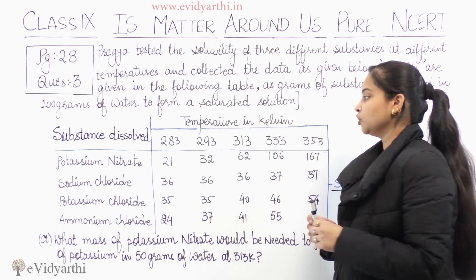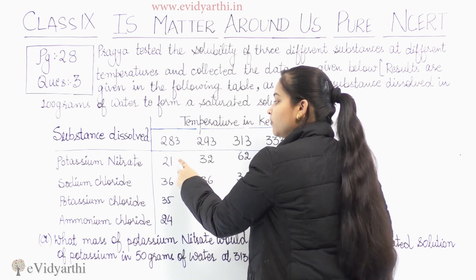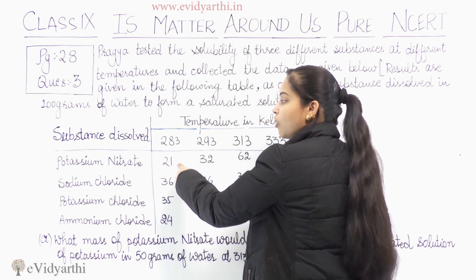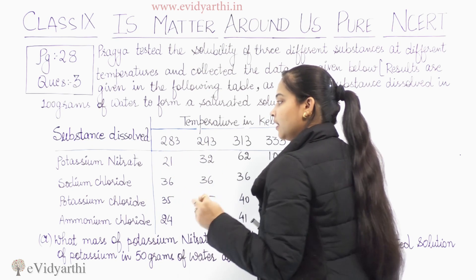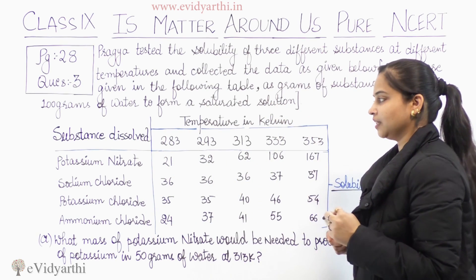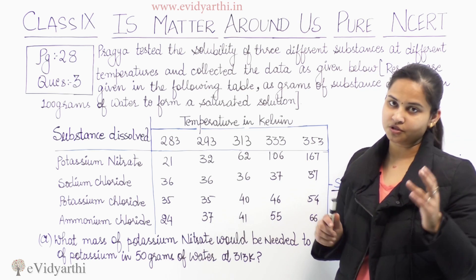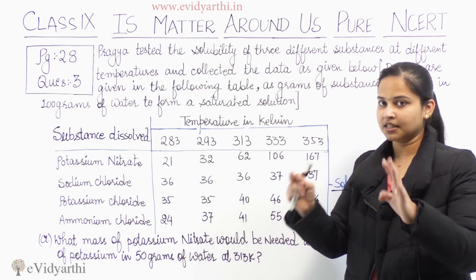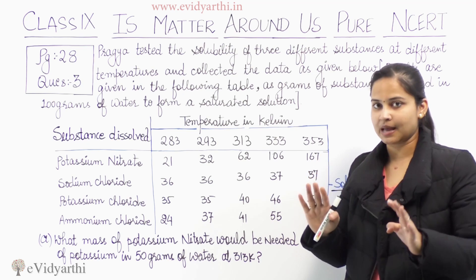For example, at 283 Kelvin, 21 grams of potassium nitrate dissolved in 100 grams of water forms a saturated solution.